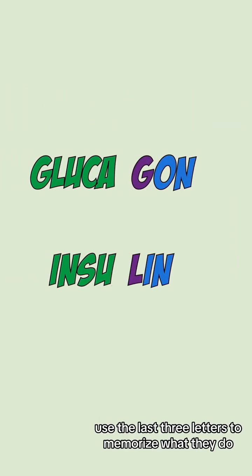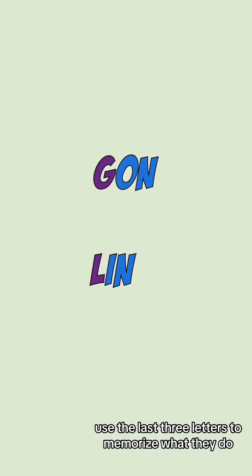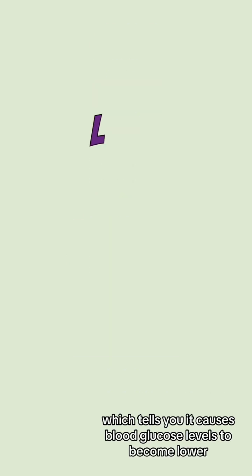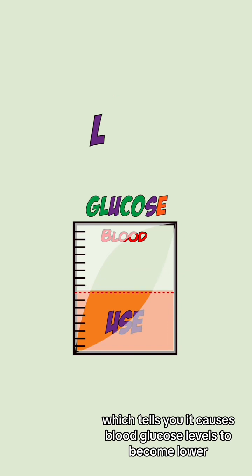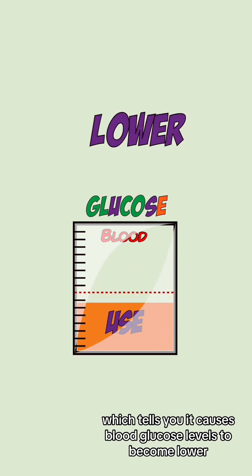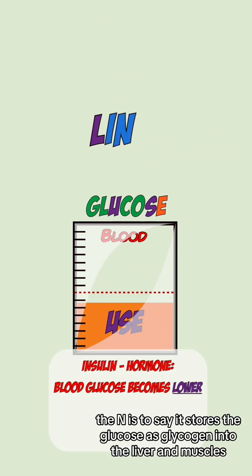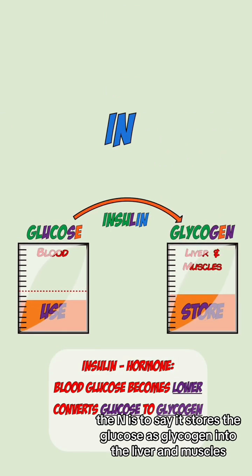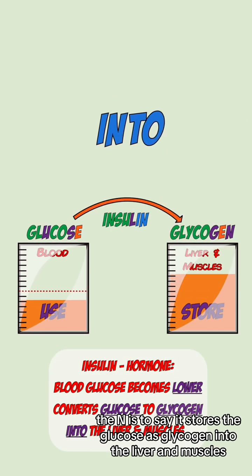For the hormones, use the last three letters to memorize what they do. The 'lin' in insulin starts with an l, which tells you it causes blood glucose levels to become lower. The 'in' is to say it stores the glucose as glycogen into the liver and muscles.